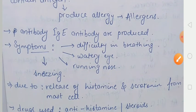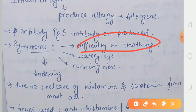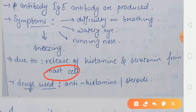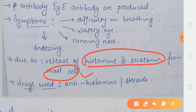Kya kya symptoms ho sakti hai? Symptoms hain difficulty in breathing, watery eyes, running nose and sneezing. Yeh allergy hoti kis ki wajah se hai? Humari body ke andar jo mast cell hoti hai, voha se histamine aur jo serotonin hai, voh release hone lagta hai. Isi ki wajah se yeh sara symptoms cause hote hai.